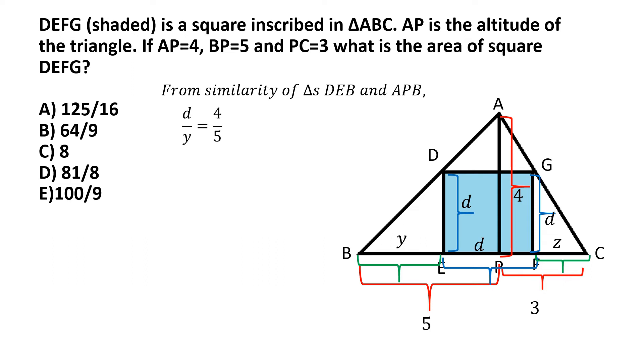So we can write d by y, and the two corresponding sides of triangle APB corresponding to these two will be basically AP, whose length is 4, and BP, whose length is given as 5. So we can write this equation that d by y is equal to 4 by 5. And from this, we can express y in terms of d as y equal to 5d by 4.